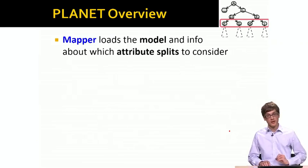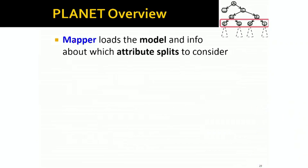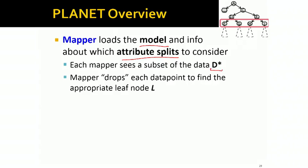In terms of the overall infrastructure, the mapper loads the model into the model we built so far into the memory, and then also information on which attribute splits to consider. And then a given mapper only sees a subset of data.